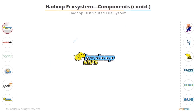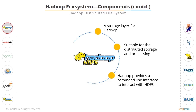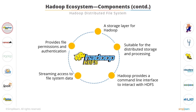Hadoop Distributed File System. Let's understand the meaning and importance of HDFS. HDFS is a storage layer for Hadoop, suitable for distributed storage and processing — while the data is being stored, it first gets distributed and then it is processed. HDFS provides streaming access to file system data, as well as file permission and authentication. HDFS uses a command line interface to interact with Hadoop.